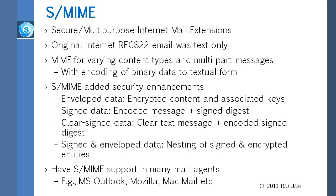MIME basically allows you to send anything you want. When security became important — and up until 1989 there was no security on the internet, with the first RFC issued in 1989 — and as the internet started getting used in businesses, they had to invent S-MIME. The original mail RFC is 822 and allows only text, but MIME allows any kind of content. You could send a five-part message: first part text, second a picture, third voice, and fourth video — so you have multi-part messages, each with its own encoding.